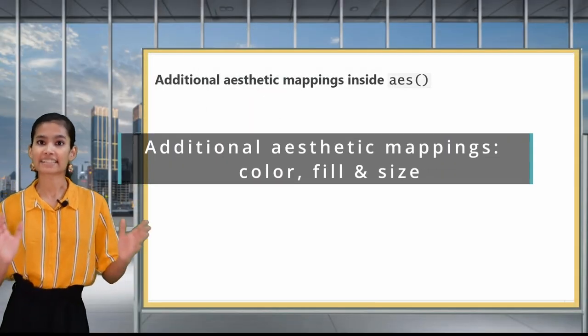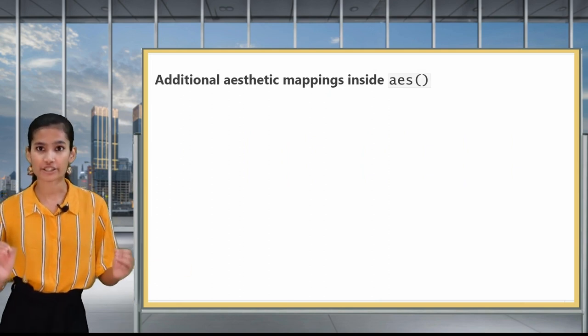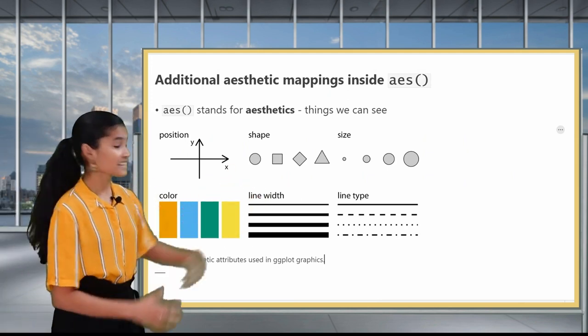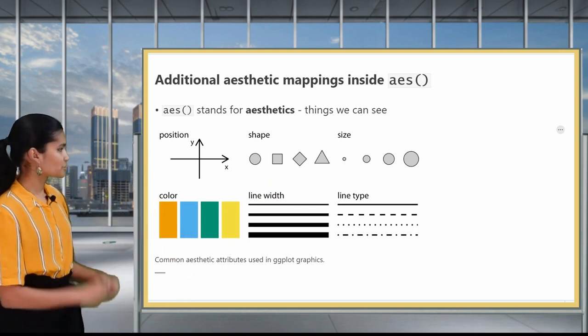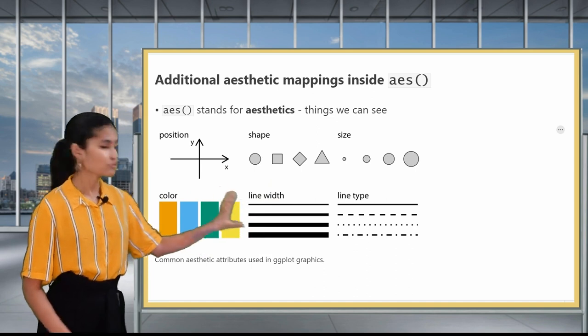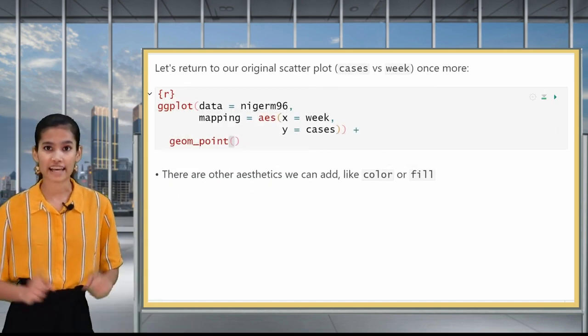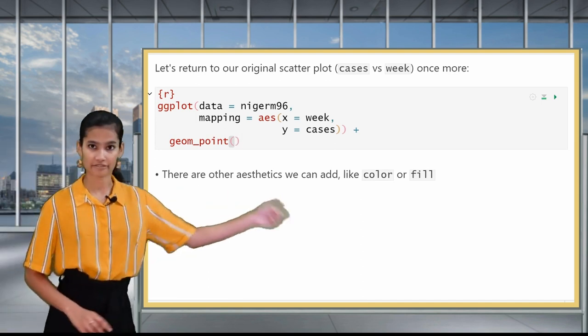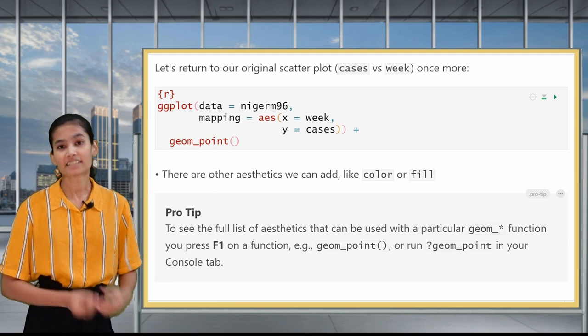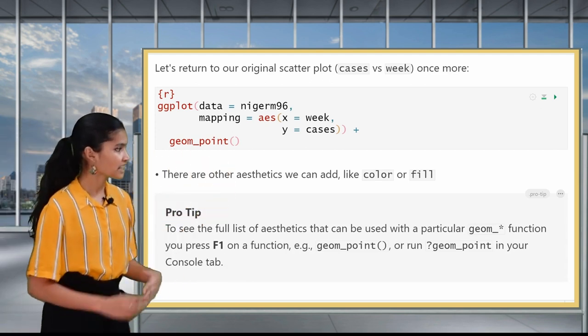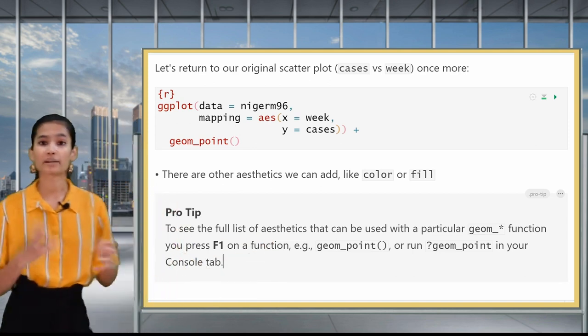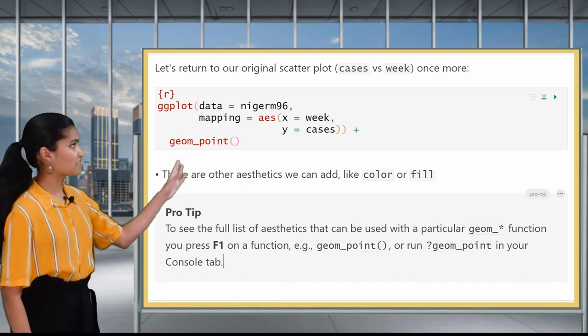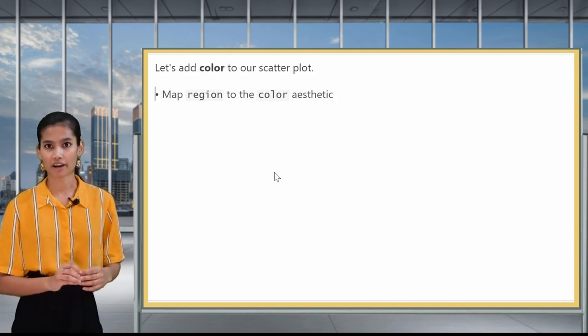Now we're going to look at aesthetic mappings that we can put inside AES in addition to x and y position. We can also change other aesthetics of the plot such as the shape of the points, the size of the points could be equal to a certain variable. We can also change color, line width, and line type. These apply to line graphs only. So let's return to our original scatterplot code where we added the aesthetics x and y and we can add now other aesthetics like color and fill. If you want to look at which other aesthetic mappings you can add to a geometric function such as geom point, you can put in question mark geom point into your console.